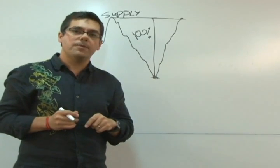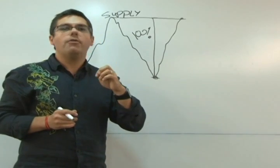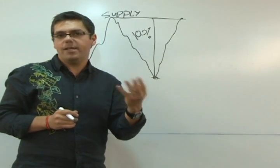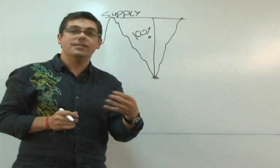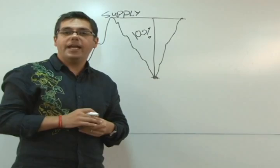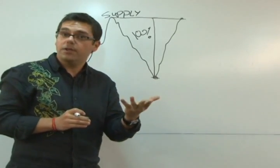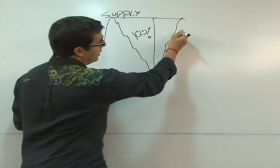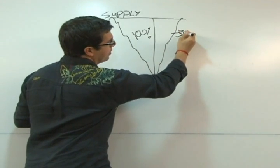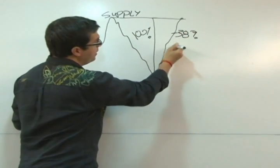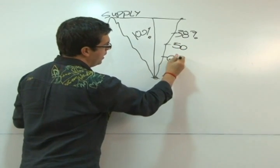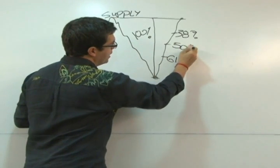My immediate answer is I am looking for a 38% retracement from the prior cycle move. Why? Because the market usually provides this eight times out of ten. So if it gives me eight times out of ten, I can pretty much project that's what's going to happen. Typically, we will get a 38% retracement, we will get a 50%, and then of course a 61% retracement.